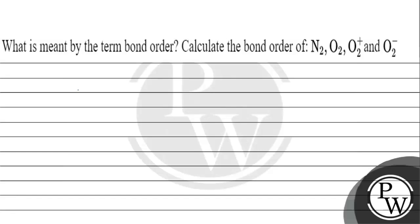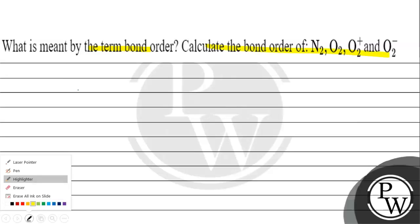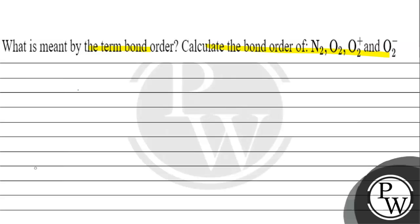Hello Bacho! Let's read this question. The question says: what is meant by the term bond order? Calculate bond order of N2, O2, O2 plus and O2 minus. The key concept for this question is bond order.